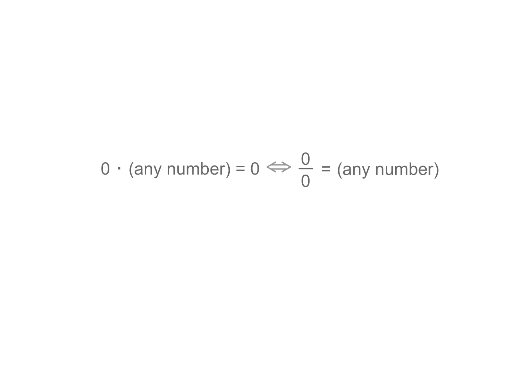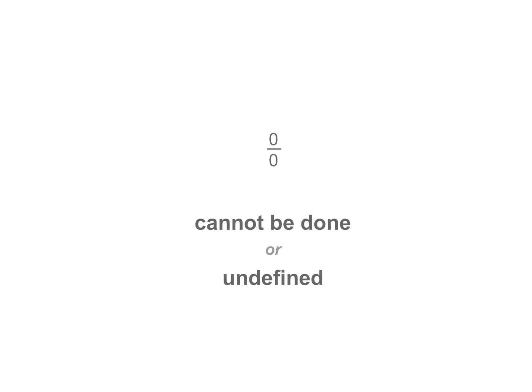But mathematicians don't like ambiguous answers. Using the inverse operation concept allows the answer to be any number, and division must, by definition, have a unique answer. Therefore, the final answer for zero divided by zero is cannot be done or undefined.